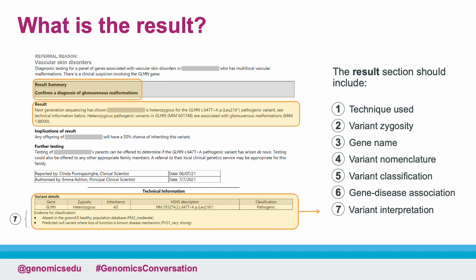Further down the report, we can see in the section labelled 7, more technical details about the variant, including the evidence that has been used to classify it, which is derived from the ACMG-ACGS frameworks. Here, the report outlines that because the variant was not seen in healthy individuals and has introduced a premature stop codon that would lead to a truncated dysfunctional protein product, the variant has been classified as pathogenic.